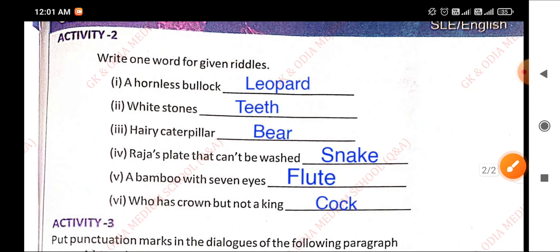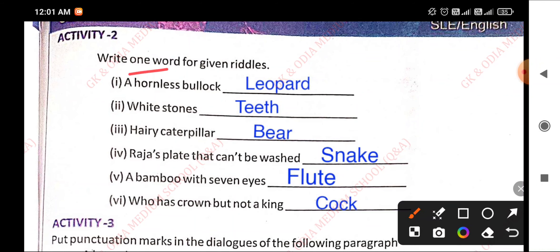Activity 2: Write one word for given riddles. Leopard, white stones are teeth, hairy caterpillar is bear, raja's plate that cannot be washed is snake, bamboo with seven eyes is flute, who has crown but not a king is cock.